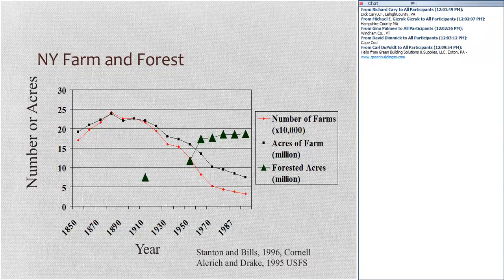Since 1880, the number of farms has decreased and acreage in farms has decreased, with aggregation of some agricultural lands. The oldest data on forested acres goes back to the early 1900s and roughly corresponds inversely with the amount of agricultural land. We start off with about 6.5 to 7 million acres of forest land in New York in the early 1900s, and currently we're at about 18 million acres. New York is now two-thirds forested, with similar patterns across northeastern and eastern states.